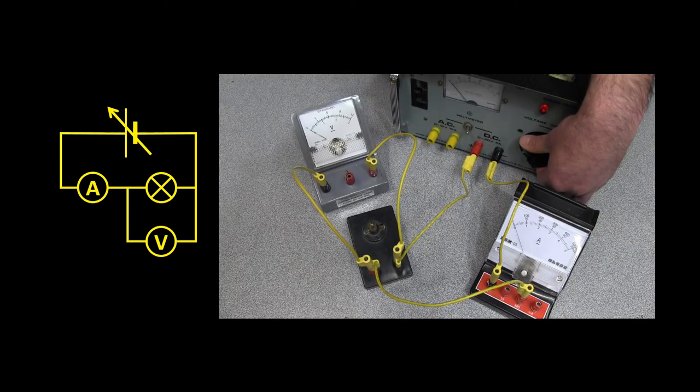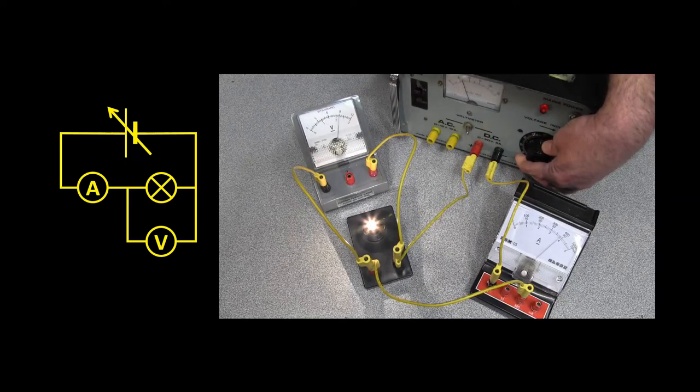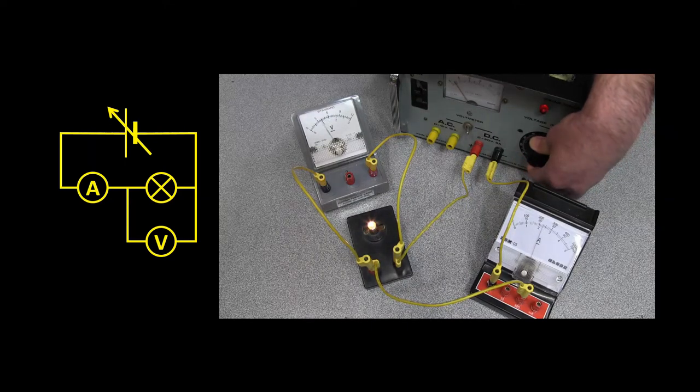In this circuit, I've connected a light globe to a fairly high-tech power pack that allows me to vary the voltage across the light globe's terminals. I've also connected an ammeter and a voltmeter.